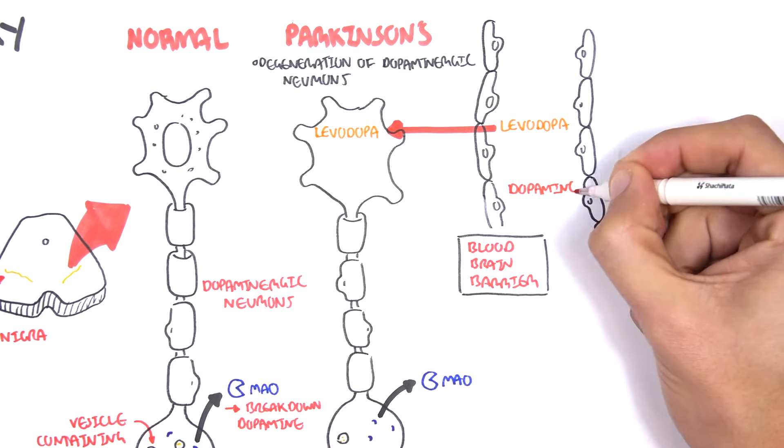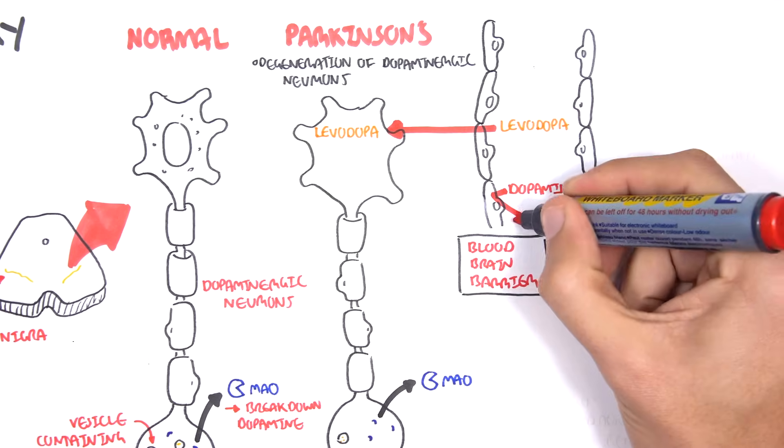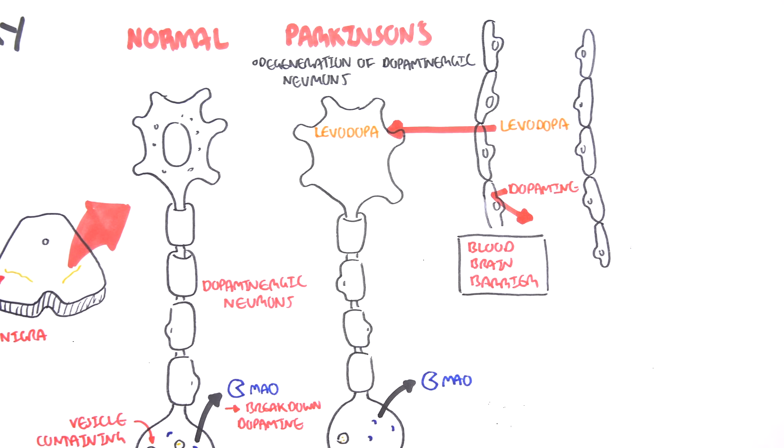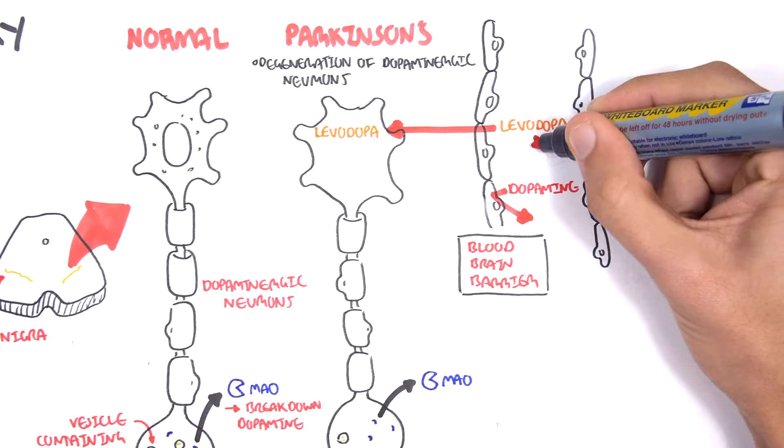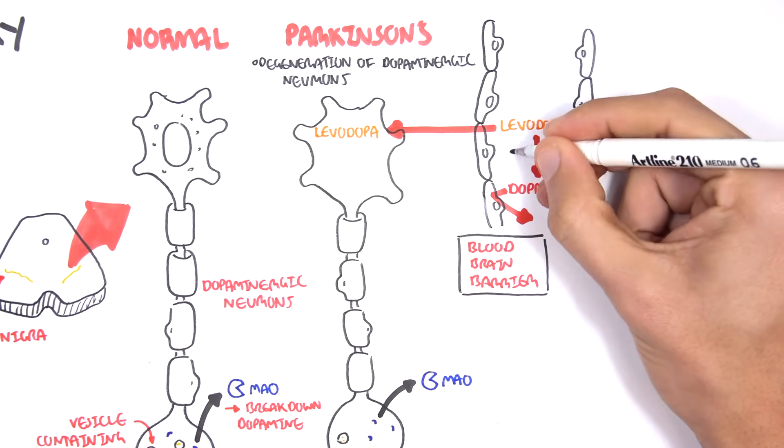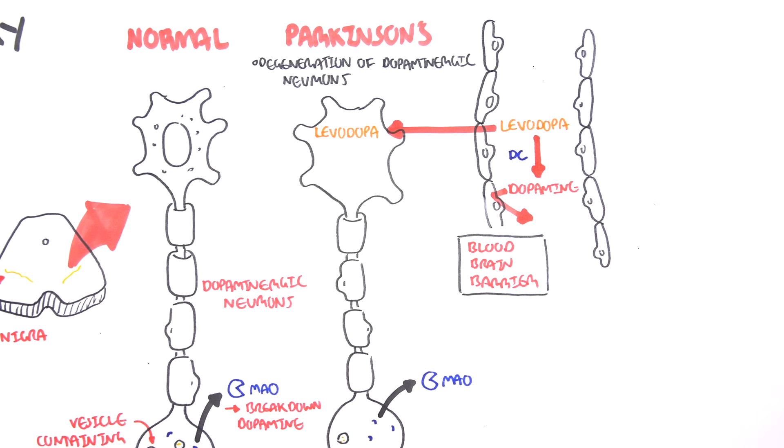Levodopa is a precursor to dopamine and it's given because it is able to pass the blood-brain barrier, so it can go into the neuron, whereas dopamine cannot pass the blood-brain barrier. That is why we give levodopa. Unfortunately, in the peripheral system or in the blood vessels, levodopa can be broken down by dopamine decarboxylase to dopamine. If it gets converted to dopamine before it reaches the brain, that's really not helpful.